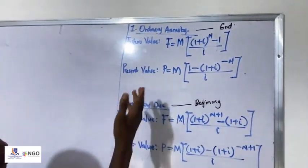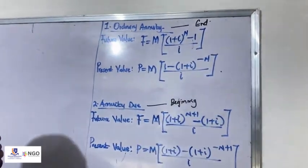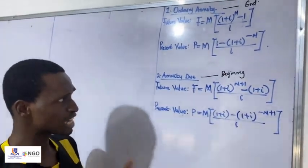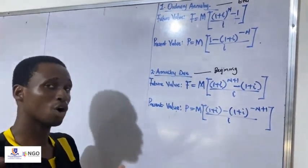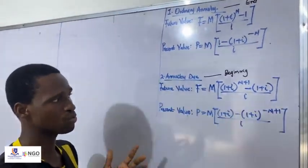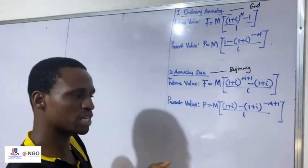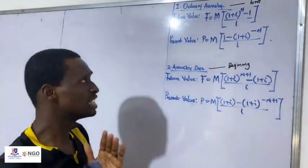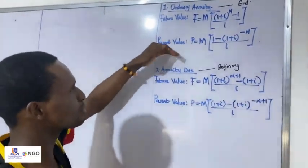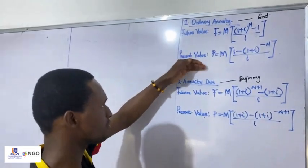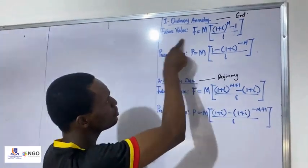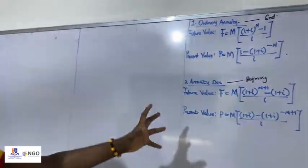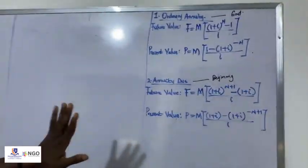Looking at the formulas, there is future value and present value — annuity can be calculated based on either. Take note that annuity is also compounded. Remember the concept of compounding — it changes the annuity statement as well. So annuity can be a future value or a present value. An ordinary annuity can either be future value or present value.